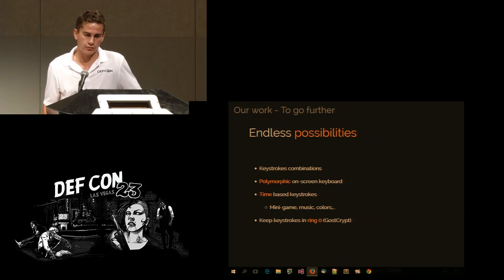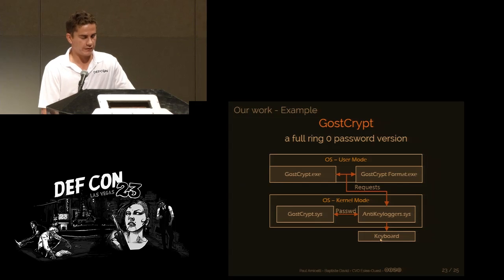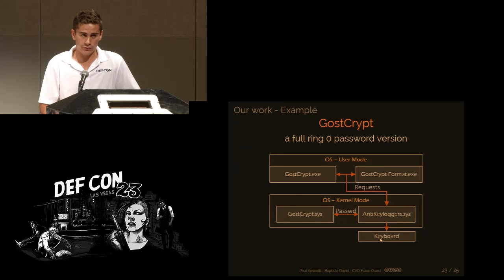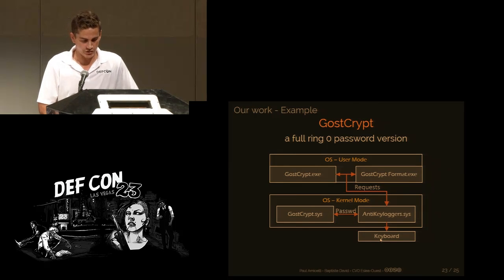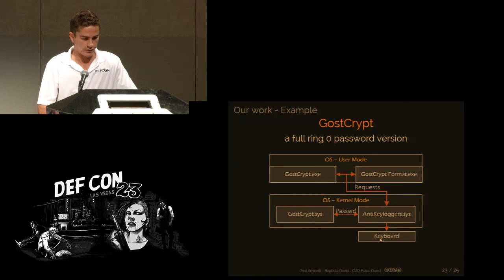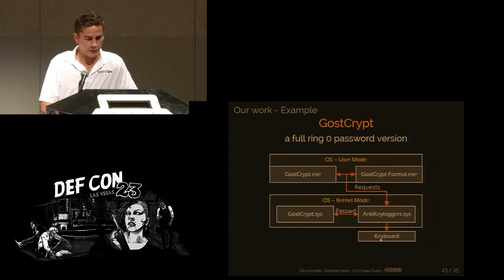The last idea is to keep keystrokes in ring zero, as we are developing in GhostCrypt. GhostCrypt is a fork of TrueCrypt developed in our lab, in which we removed UK/USA algorithms and added others. The problem with GhostCrypt and TrueCrypt is that the passphrase is in ring 3, while all the encryption is in ring zero, making it easy to retrieve the password with DLL injection. The idea is to lower all this procedure into kernel mode to add a security layer — keystrokes will be internally stored as soon as the password prompt is shown and sent directly to the encryption function. That way, if one wants to retrieve the passphrase, they will have to be in the kernel, which is much, much more complicated.